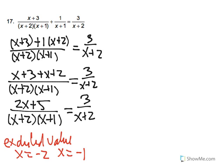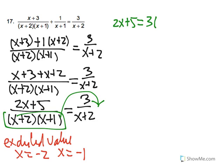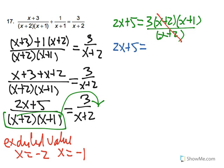So what we want to do is bring this expression over to the right. So we have 2x plus 5 equal to 3 times x plus 2 times x plus 1 over x plus 2. So now the x plus 2 will cancel out. So we have 2x plus 5 equal to 3 times x plus 1.